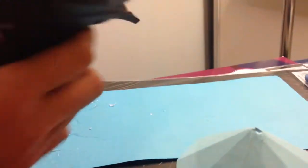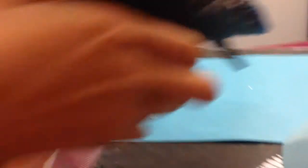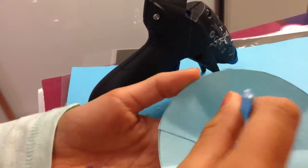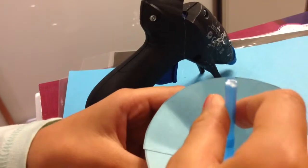Now take your straw and put some hot glue on the top of it. Then take your cone and put the straw in the top, in the middle of your cone, and hold it there.